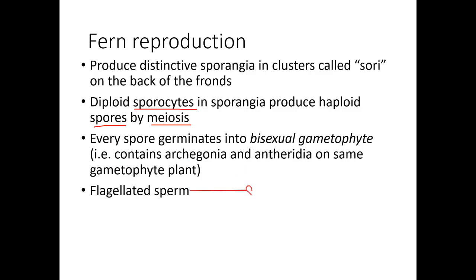When the spore grows into a little gametophyte, it's a little heart-shaped leafy looking structure. The fern gametophyte is bisexual, which means the archegonia and antheridia are on the same gametophyte. You remember in the moss there was a female gametophyte with the archegonia and a separate male gametophyte with the antheridia. In the fern, both organs are on the same little gametophyte. The sperm are still flagellated and need to swim to the egg — some sperm probably fertilize eggs on the same gametophyte, some probably go to others.